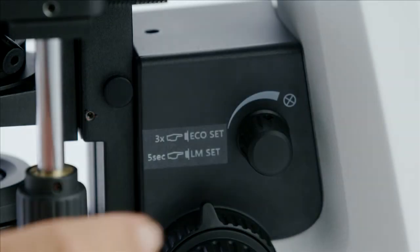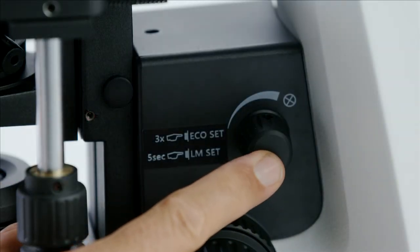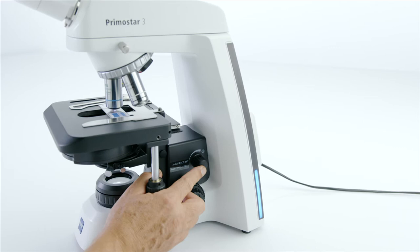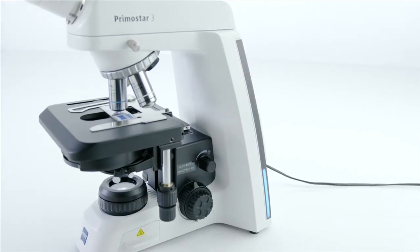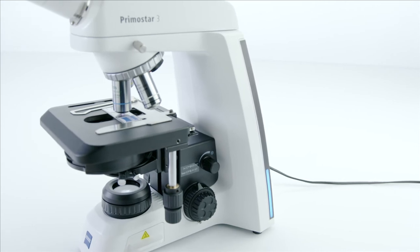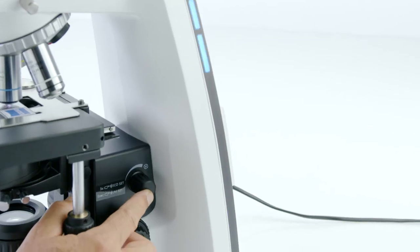Push the Light Intensity knob for 5 seconds to activate the Light Manager. The LED belt on both sides of the microscope stand will indicate this status by reducing its intensity from maximum to minimum.